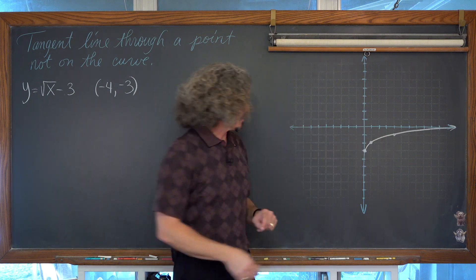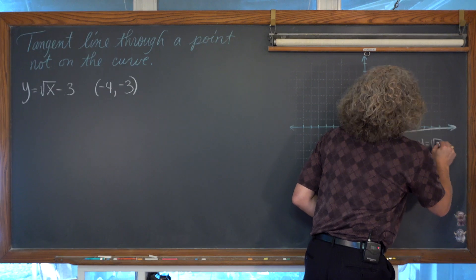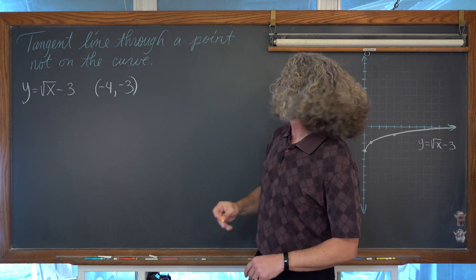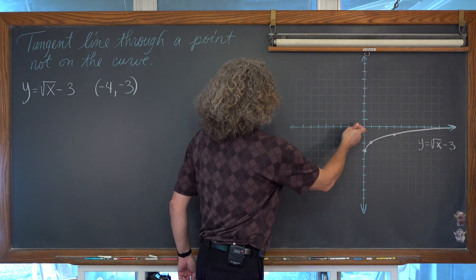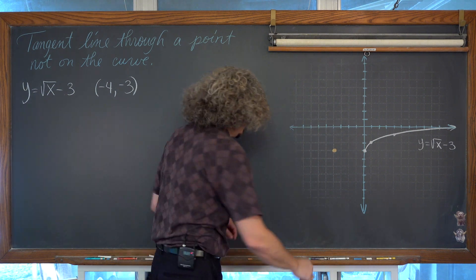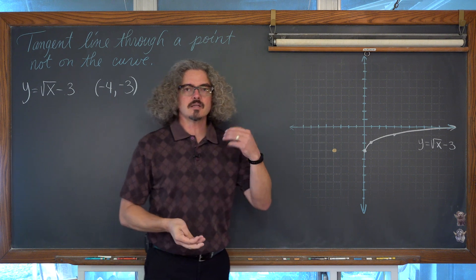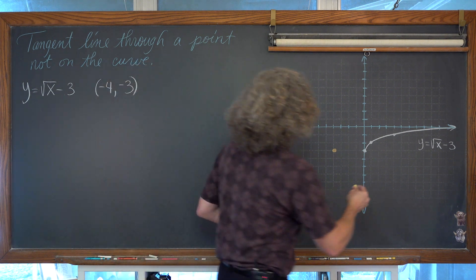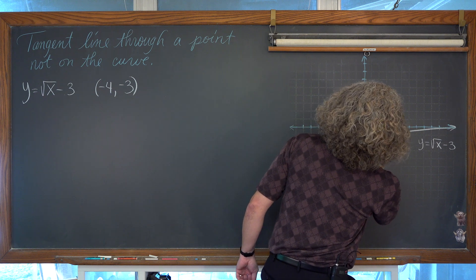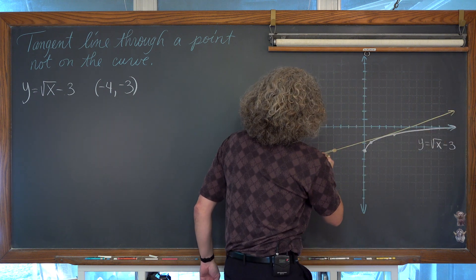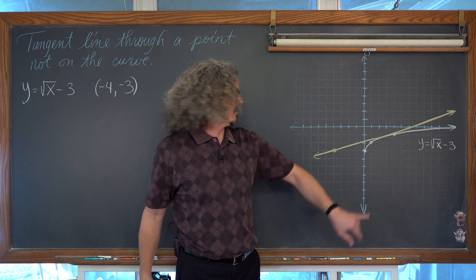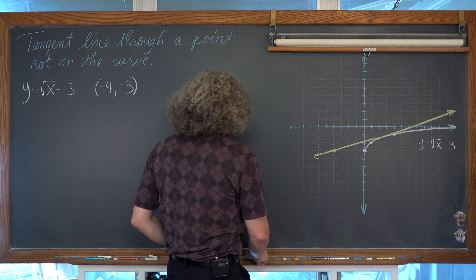Here we have y equals the square root of x minus 3. We have our point that is not on the curve — negative 4, negative 3 — so left 4, down 3. Here is our point at (-4, -3). Our goal today is not to be given a set of steps and follow them, but to think about what we need to write the equation of a tangent line. It is probably going to look something like the line I'm sketching here.